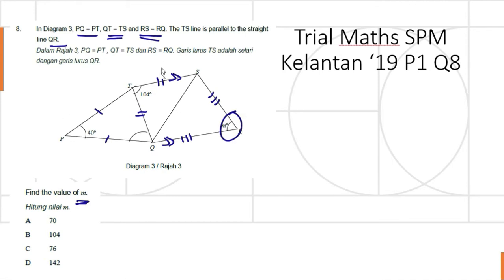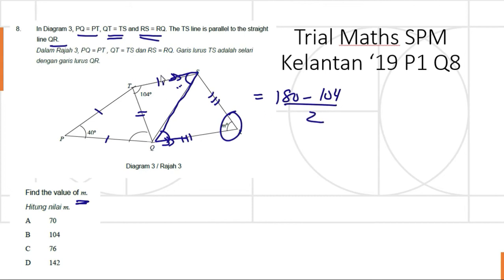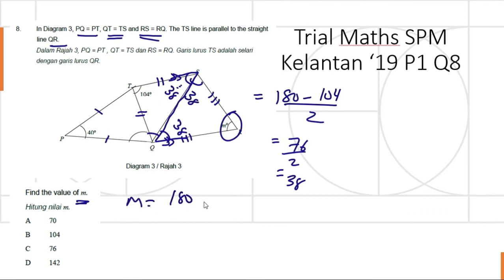Since TS is parallel to QR, this angle is equal to this angle. This angle is equal to (180 minus 104) divided by 2. These two lines are equal, so these two angles are equal. We get 76 over 2, which is equal to 38. So this angle is 38, and this one is also 38. Therefore, m is equal to 180 minus 38 minus 38, which is equal to 104.